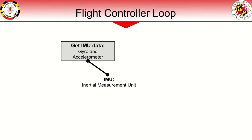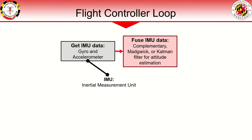Let's take a look at what processes are occurring in the flight controller, or inner loop. First, accelerometer and gyro data is pulled from the flight controller's inertial measurement unit. This data must be processed with some sort of filter to estimate the drone's orientation, as individual accelerometer or gyro data cannot do this alone. The simplest and least accurate filtering technique is called a complementary filter. The most accurate may be a Kalman filter, though it is very computationally costly. A Mahony filter is a good compromise between the other two.